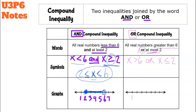To graph the OR inequality, place 2 and 6 on the number line. For x > 6, put an open circle at 6 and shade to the right. For x ≤ 2, put a closed circle at 2 and shade to the left. The OR graph looks different: shading goes away from the circles in opposite directions.